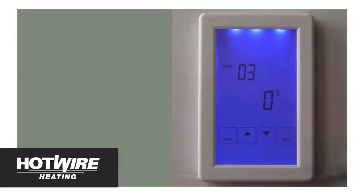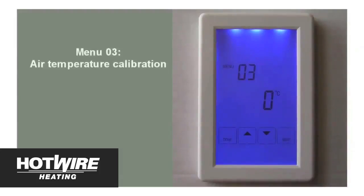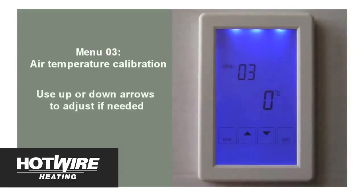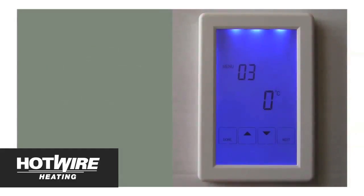Menu 3 is used to calibrate the unit's air temperature thermometer. Simply use the up or down arrows to calibrate the unit's thermometer up or down. Since we are only using the underfloor temperature sensor, we will leave this at 0 degrees difference and press next to move to the next menu.